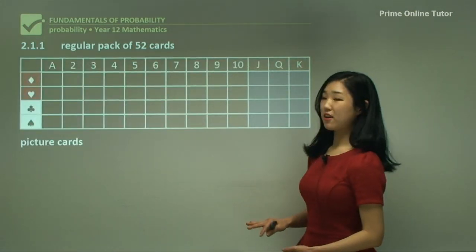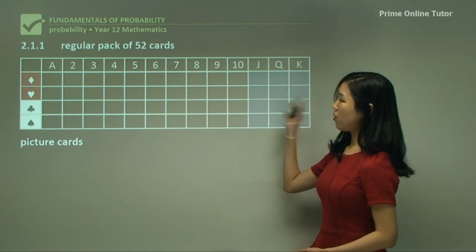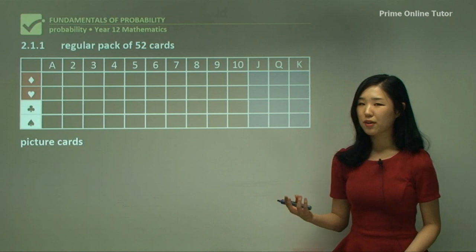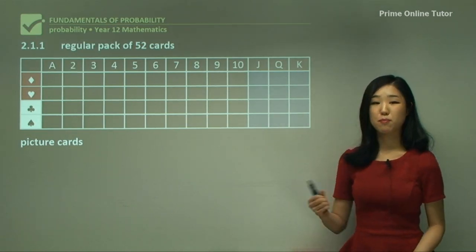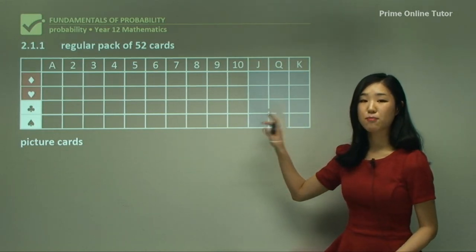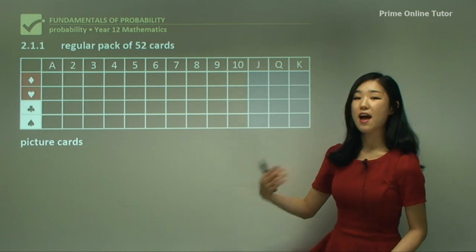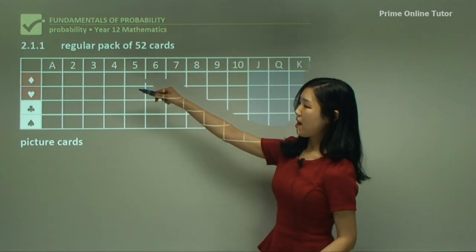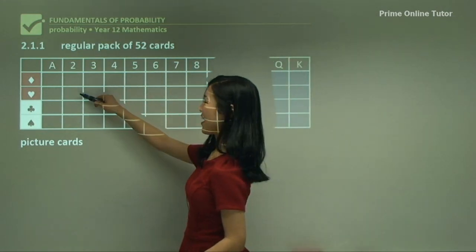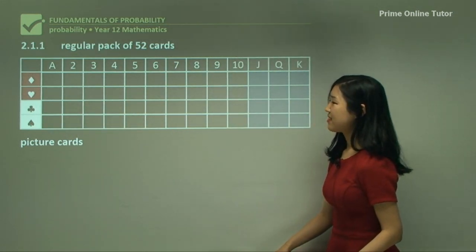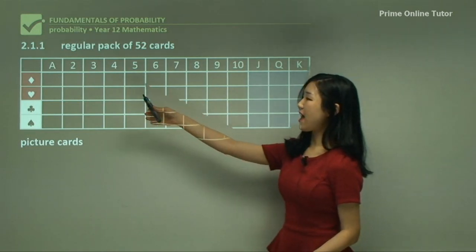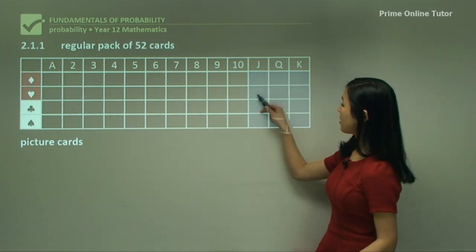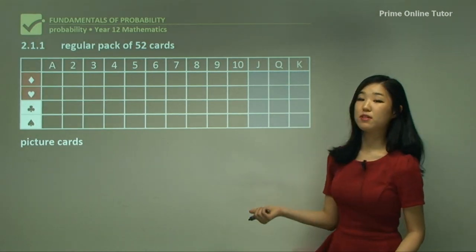This picture card shows all the possible outcomes in a particular pack of cards. With card questions, I recommend drawing up this table at the beginning of the question and referring to it whenever you answer, because once you draw up this table, answering the question is really simple — it's just a matter of counting up blocks. I've got diamond, heart, clover, and spade, so there are four suits in a pack of cards, and I've got Ace up to 10, Jack, Queen, and King.